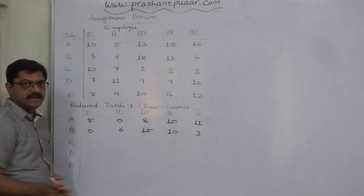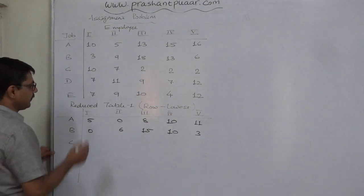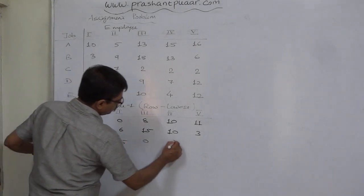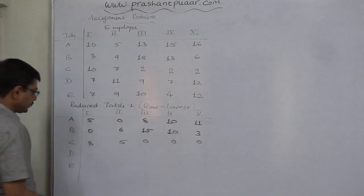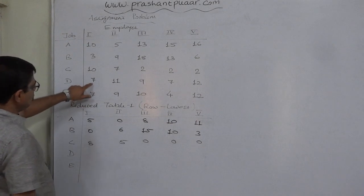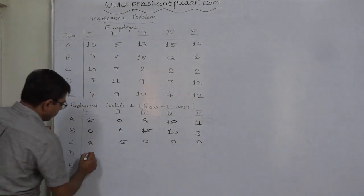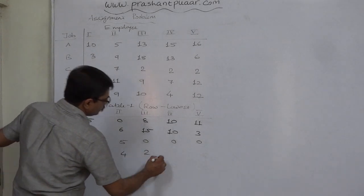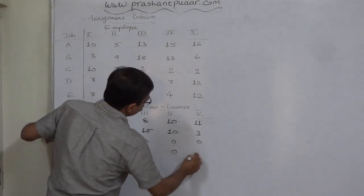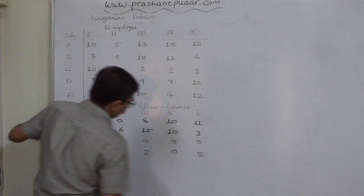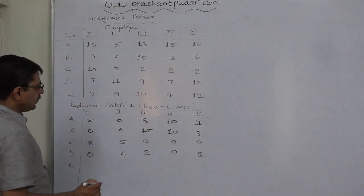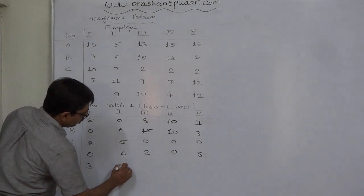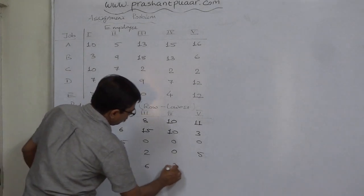In row C, the lowest value is 2, appearing 3 times: 10−2=8, 7−2=5, 2−2=0 in all three columns. In row D, the lowest value is 7: 7−7=0, 11−7=4, 9−7=2, 7−7=0, 12−7=5. In row E, the lowest value is 4: 7−4=3, 9−4=5, 10−4=6, 4−4=0, 12−4=8.